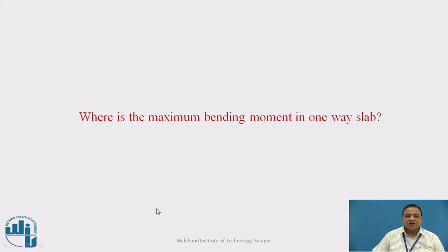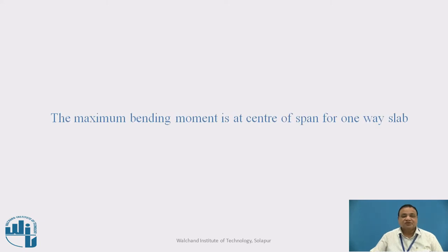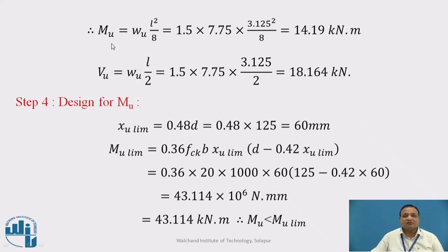The maximum bending moment is at center of span for one-way slab, at the mid-span. M_u equals W times L squared upon 8, where L is effective span. It is 1.5 times 7.75 times 3.125 squared divided by 8, equals 14.19 kN·m. V_u equals W times L by 2, which is 1.5 times 7.75 times 3.125 divided by 2, equals 18.164 kN.